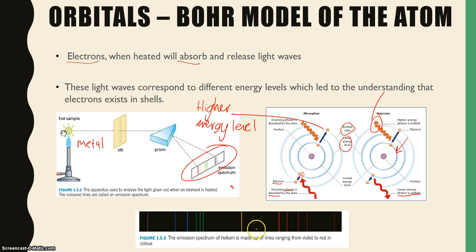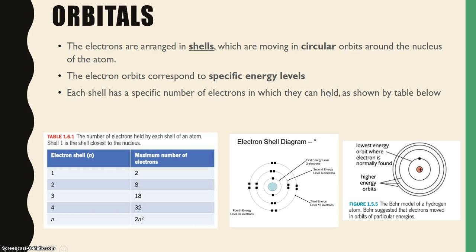Using this understanding that electrons are excited and they'll release light when they drop down an energy level, this helped us understand that electrons are arranged in shells. Different energy levels will release different light. Electrons are arranged in shells and they're moving in circular orbits around the nucleus. That's the Bohr model of the atom.